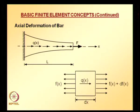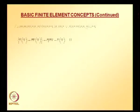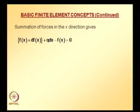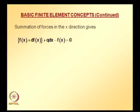To derive the governing differential equation for axial deformation of a bar, the first step is to take a small differential element out of this bar and indicate all the forces acting on that differential element, then sum up the forces in the x direction. We want this differential element dx to be in equilibrium. That means, since this is a 1D problem, the sum of all forces in the x direction equals zero. Applying that condition gives us an equation which we can rearrange — f as a function of x cancels, leaving us with the rearranged form.